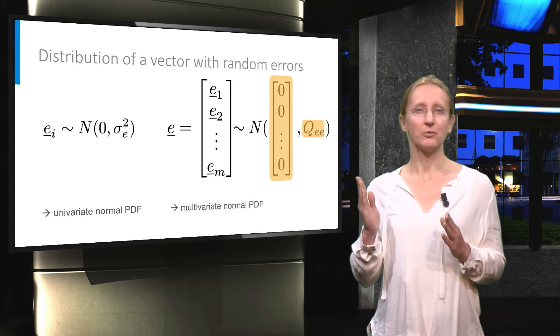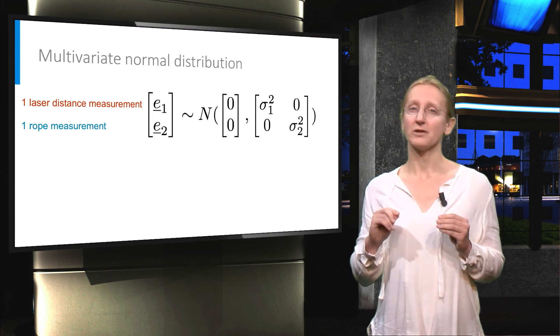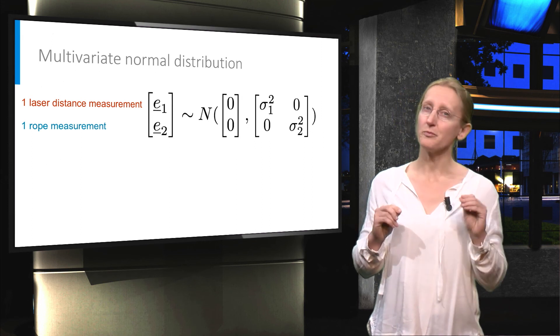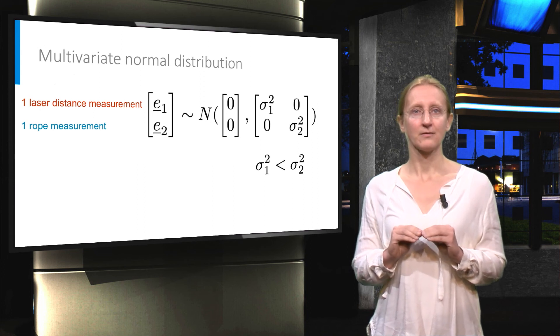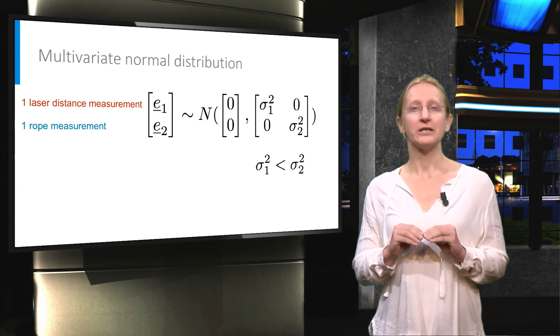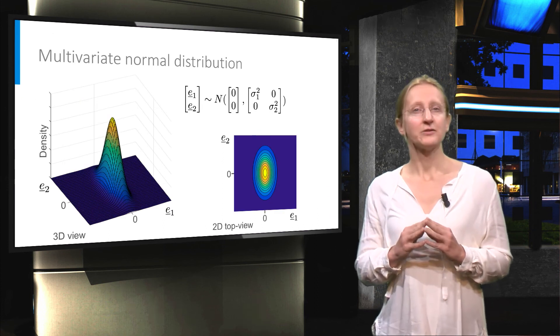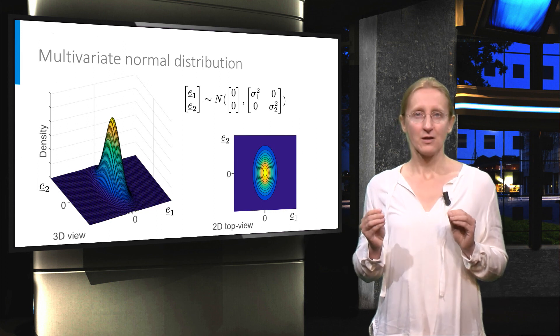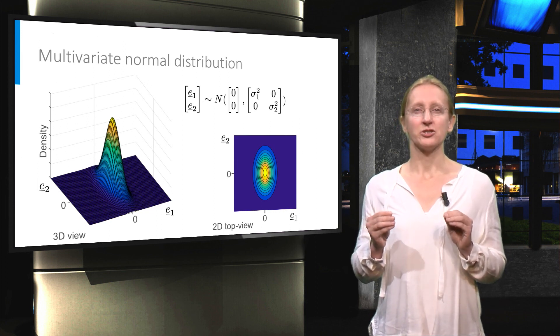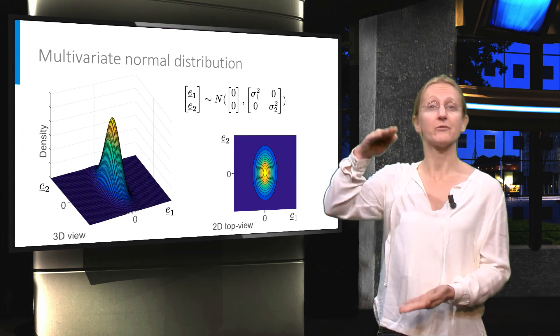Therefore we will look at this example, where we collect one laser distance measurement with high precision and one rope measurement with much lower precision. The corresponding PDF looks like this. On the left you can see a surface plot and on the right a top view. The larger standard deviation of the rope measurement results in a larger spread in the vertical direction of this plot.